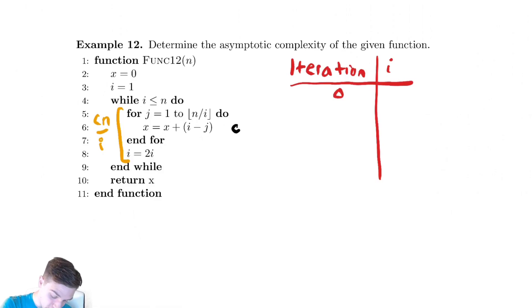i starts at 1. It then gets multiplied by 2, then gets multiplied by 2 again. After k iterations, we have 2 to the k.